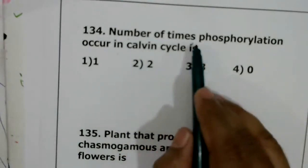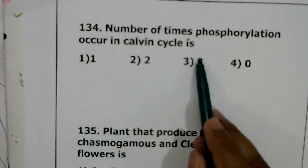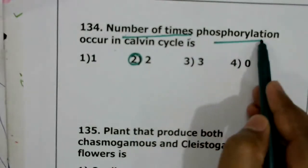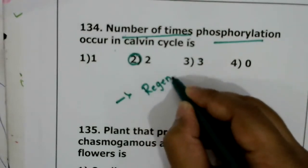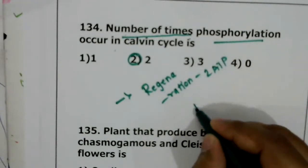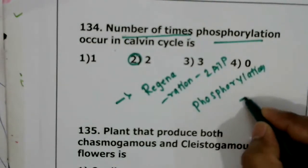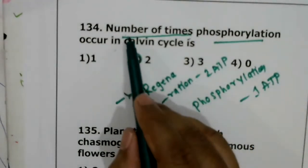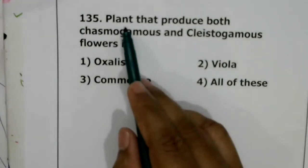Question 134: how many times does phosphorylation occur in the Calvin cycle? Many students answer three, but it is two. During the Calvin cycle there is a regeneration step where two ATPs are used. There is also a phosphorylation step. The question asks for the number of times phosphorylation occurs, which is two.